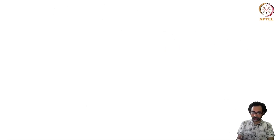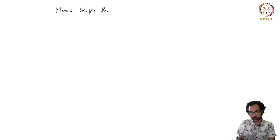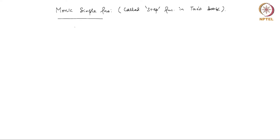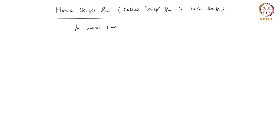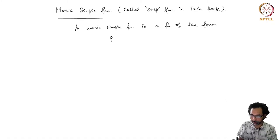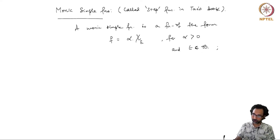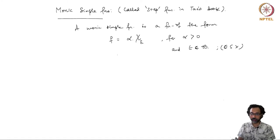Another special criterion is given by so-called monic simple functions. These are called step functions in Tao's book. A monic simple function is a function of the form f equals α times the indicator function of E, for α strictly positive and E a measurable subset in X.